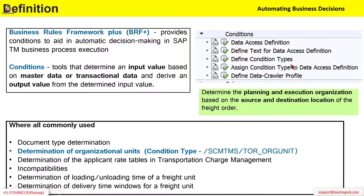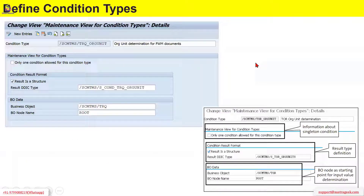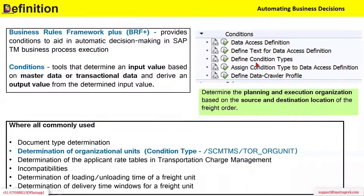There are two different things we should look at to understand conditions. What you see in the back-end SPRO area includes conditions, access definition, condition types, crawler profile, and all that stuff. We will see what is there in the back end and try to understand that. There is also something on the front end — we will see how conditions are created, and how they are used and applied.